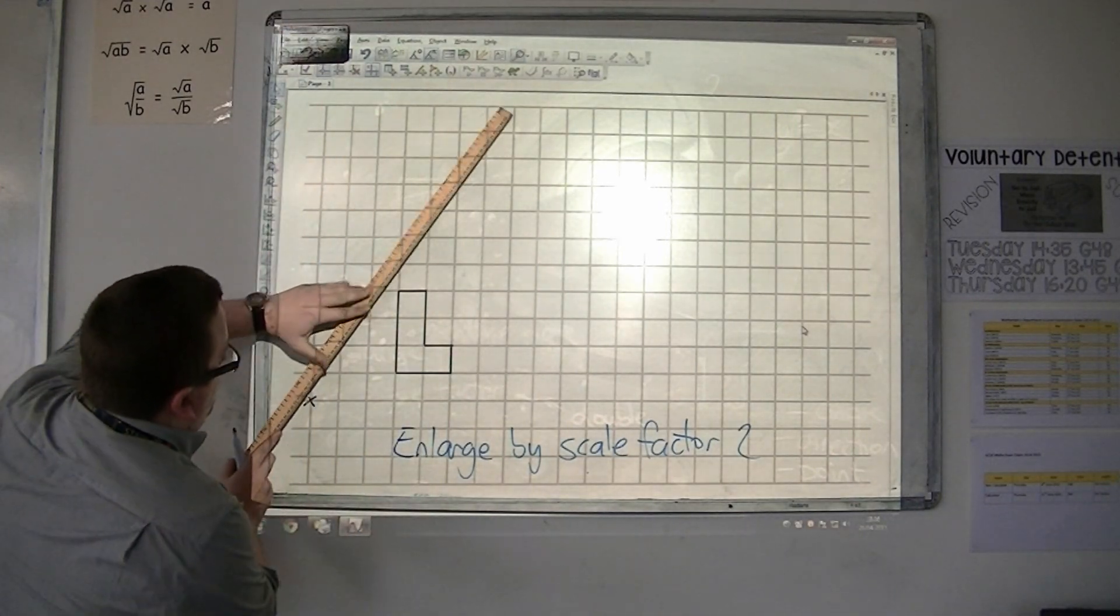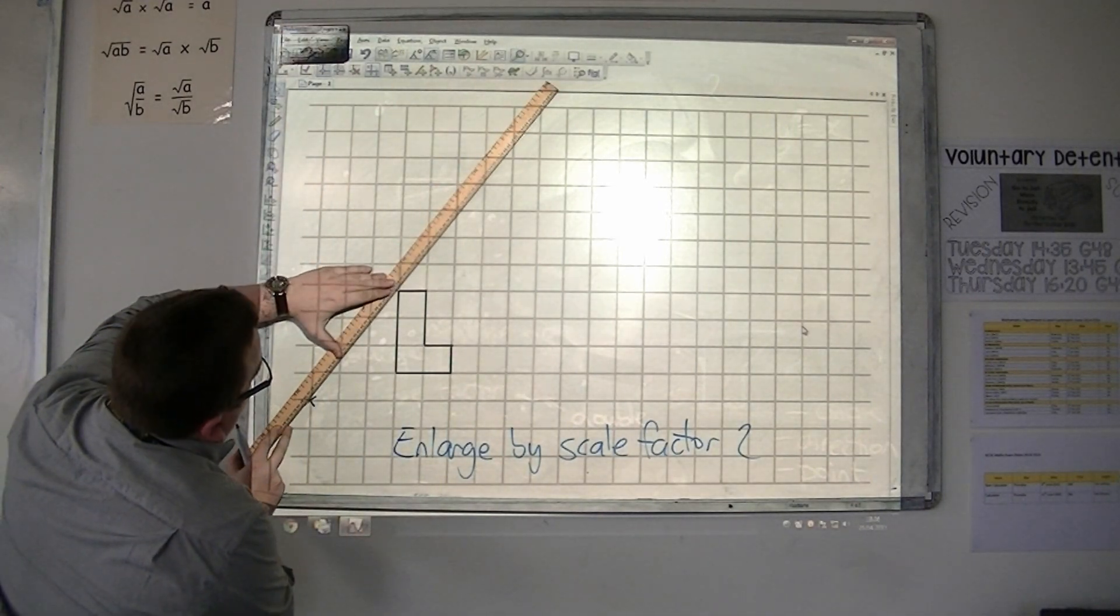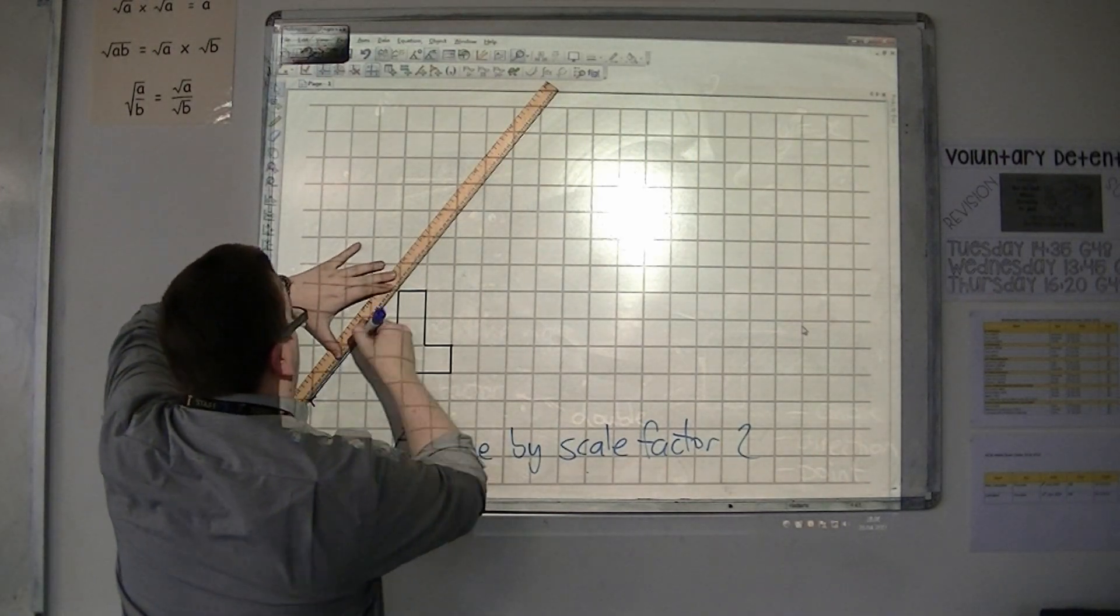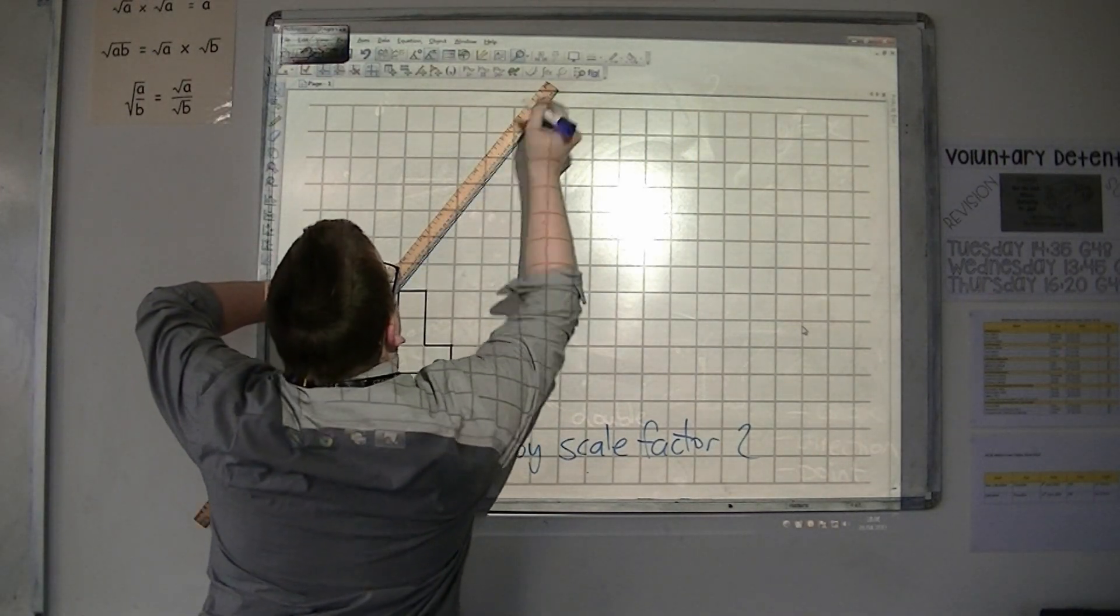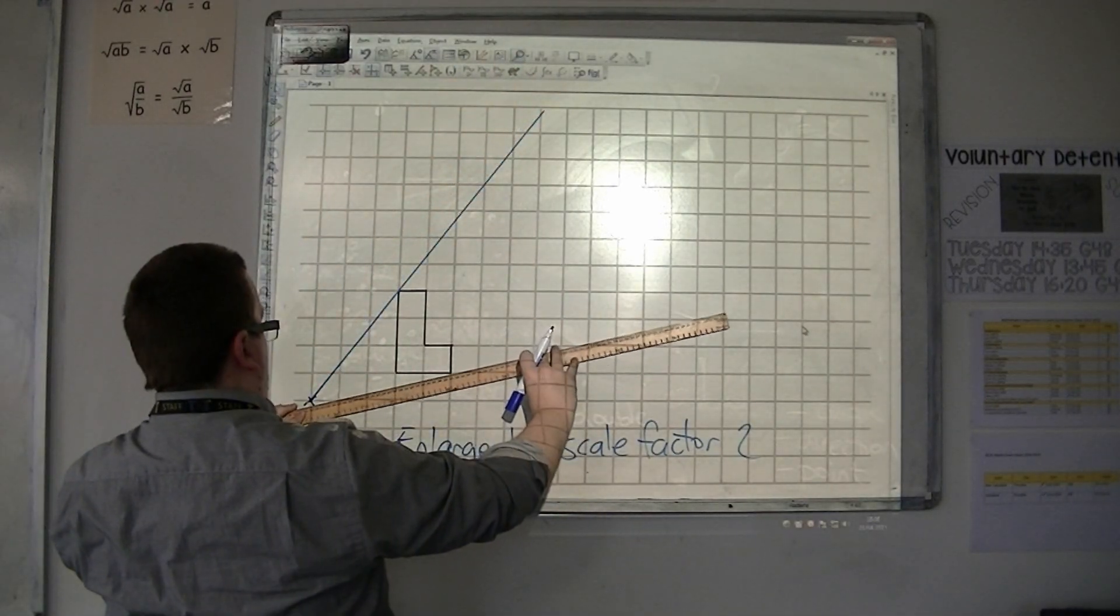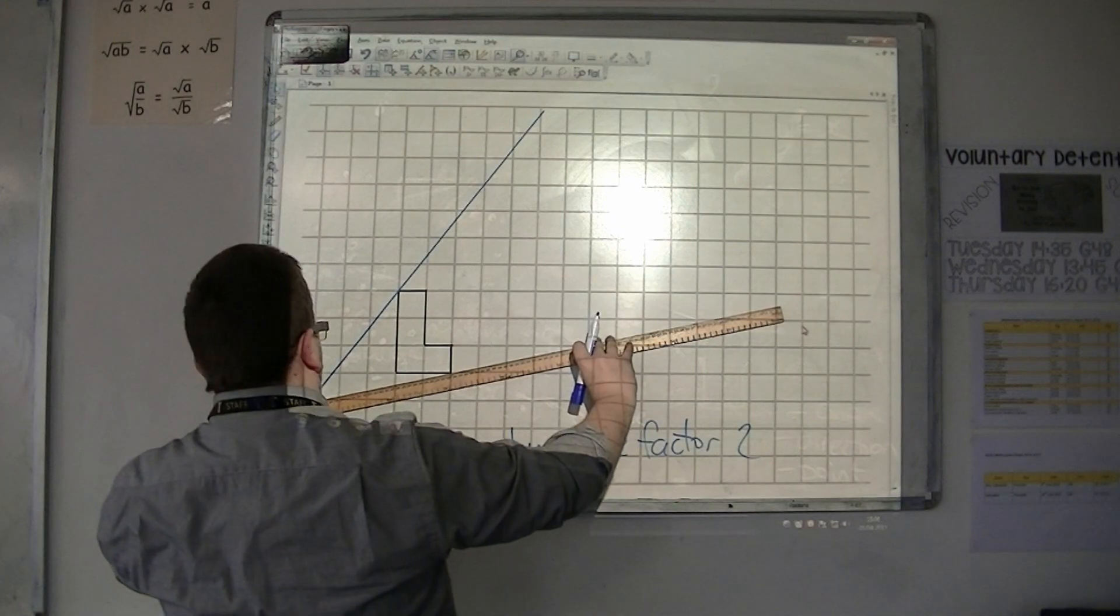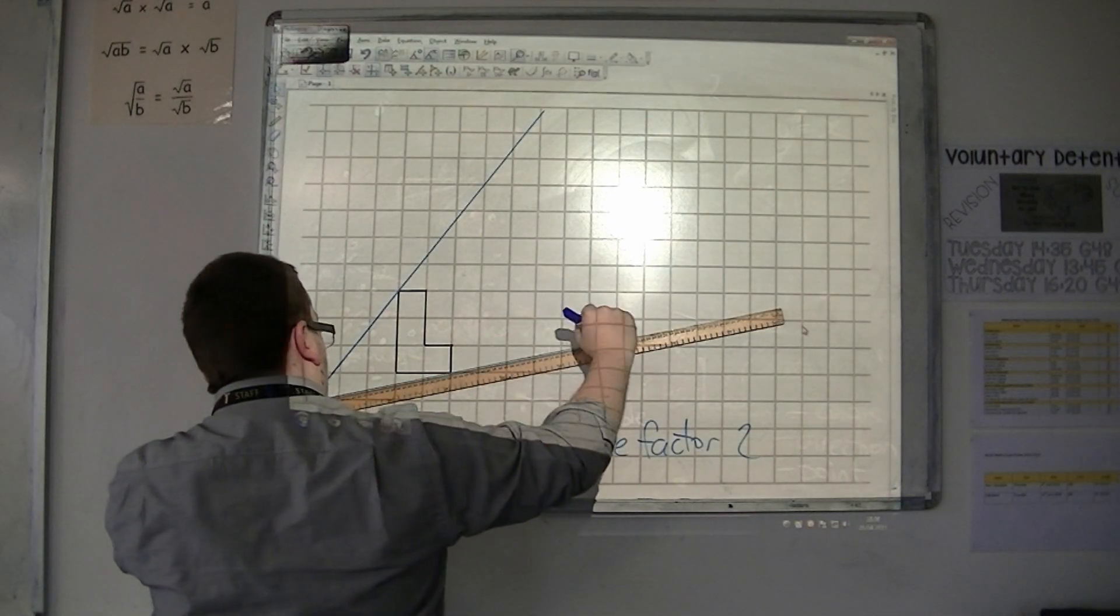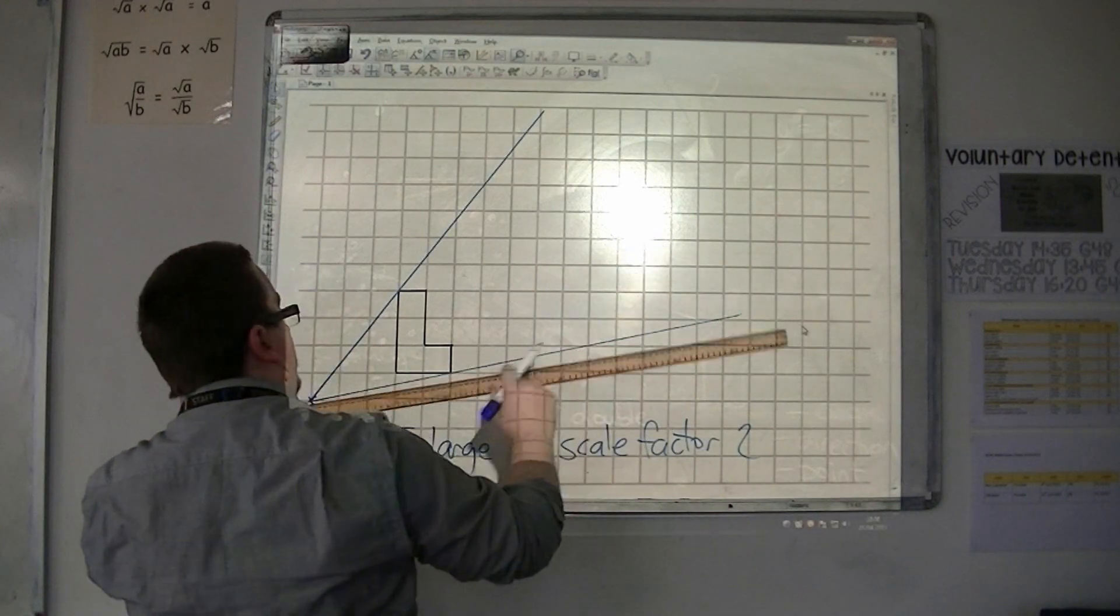So I usually try to draw a line through the top point, catching the top of the shape. And then I draw a line through the bottom of the shape. Like so.